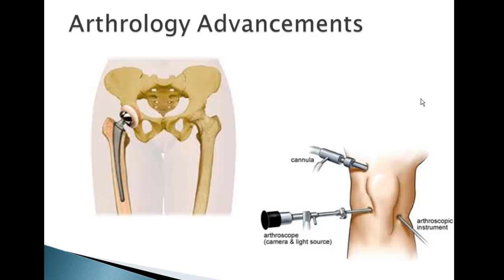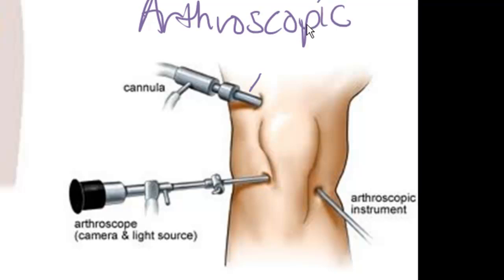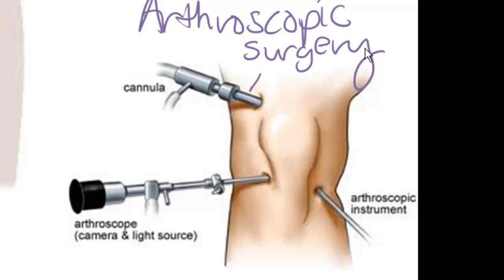I'd like to wrap up this video by taking a look at advancements in arthrology. The two I want to focus on are arthroscopic surgery and hip replacement. With arthroscopic surgery, surgeons go in and insert a small pin with a camera. Then, depending on what repairs are needed, different tools are inserted to fix whatever needs fixing. You walk out of the OR with maybe two, three, or four little puncture wounds around your knee or wherever they were operating. The greatest thing about this type of surgery is that it really cuts down on healing time because it's not so invasive.